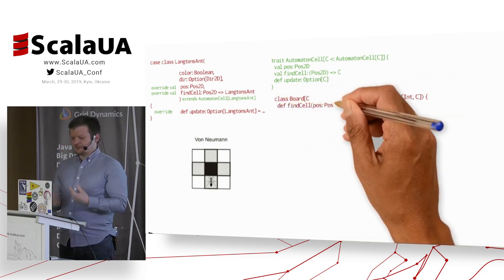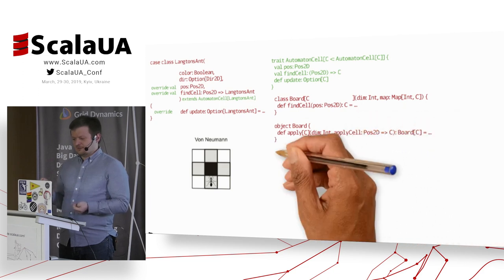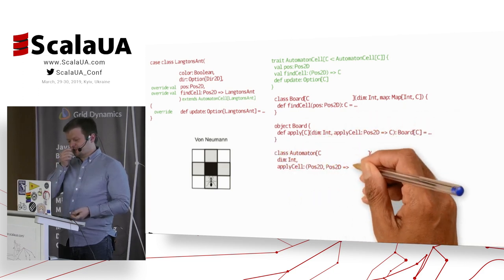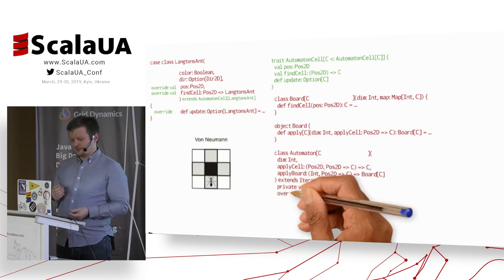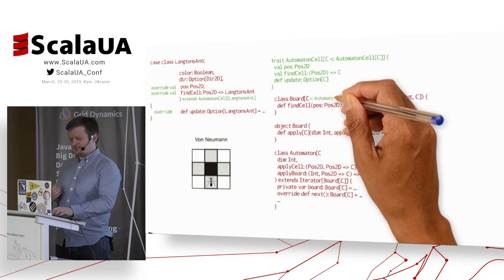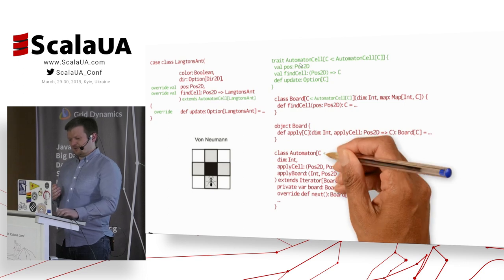And we can also rewrite the board. And we can also rewrite the automaton itself. And maybe one curious thing is that this trait has a lower bound here, which says that because if we want to find a cell at the given position, then we want the cell itself. We don't want just the trait. We need to access those data, which is only in the case class Langton's ant.